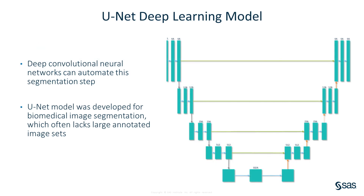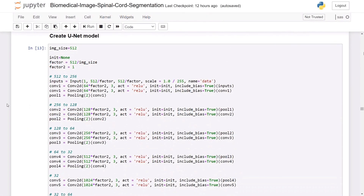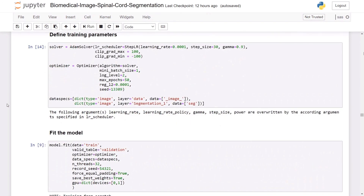The deep learning model I'll be using is called the U-Net model, which is a convolutional neural network shaped like a U. It's made up of a series of convolution, up-convolution, and concatenation layers. The U-Net model is particularly good at producing highly accurate segmentation results on smaller training sets, making it ideal for biomedical image segmentation where it's often difficult to find large sets of labeled data — due to patient confidentiality and the extensive labor required to manually label biomedical images. Here I'm building the U-Net model from scratch by adding the individual layers to the model.